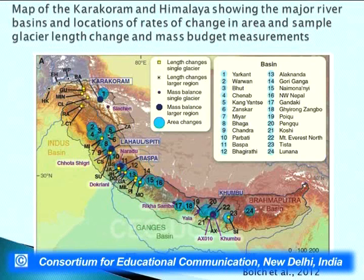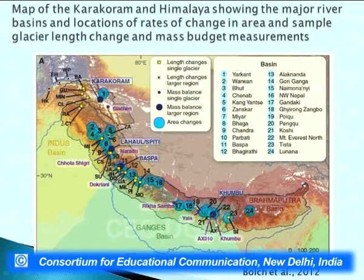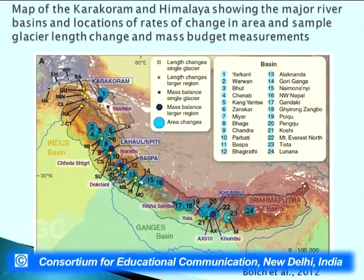This slide is taken from the journal Science, from a paper by Bolch et al. They collected data from all possible studies done in the Indian Himalayan and Karakoram regions and concluded that most Himalayan glaciers are retreating, but the retreat rate varies from one area to another. In the Karakoram region, the area change circle is smaller, meaning glaciers there have not retreated at the same rate as those in Sikkim, Nepal, Uttarakhand, and Himachal Himalaya.